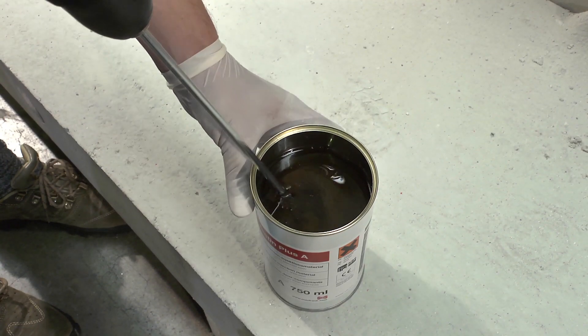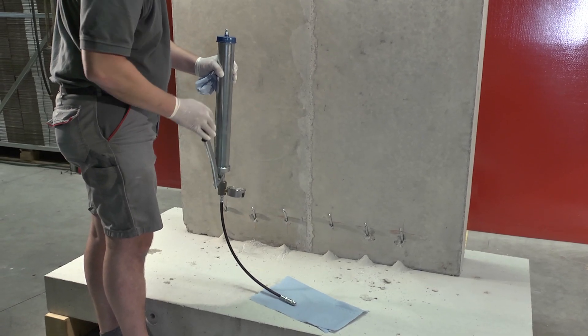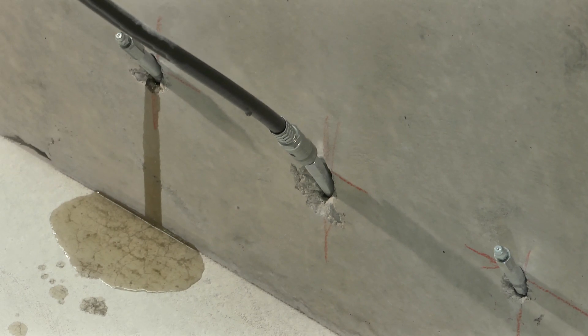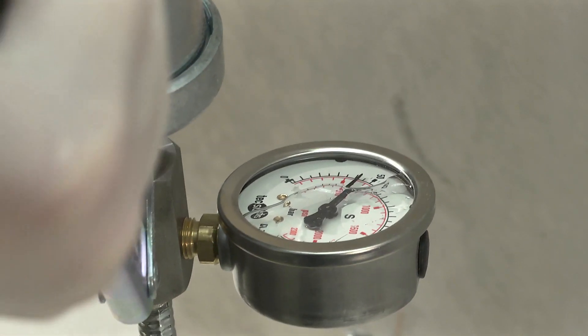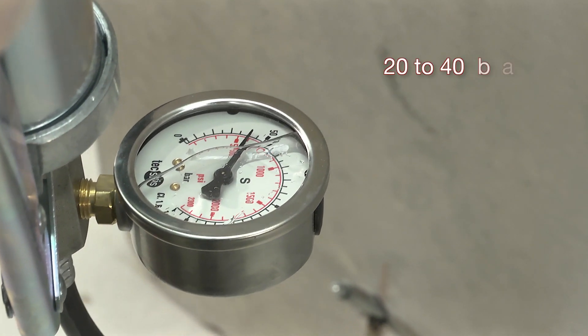After thorough mixing of the two-component resin, several injections should be carried out in accordance with the project requirements until the crack or joint is filled completely. All injection work should be performed at pressures between approximately 20 and 40 bar.